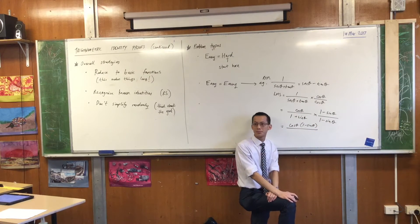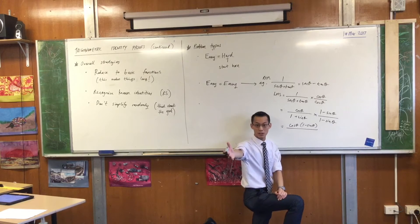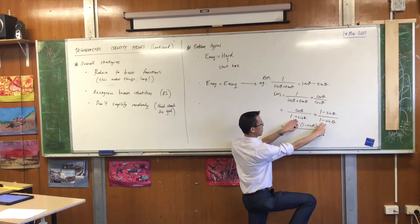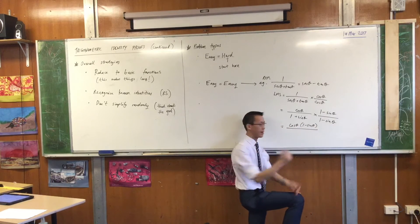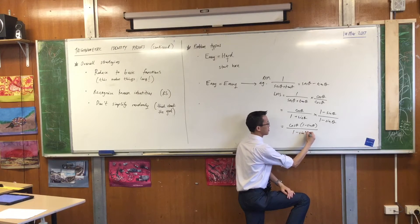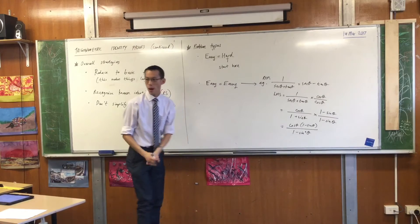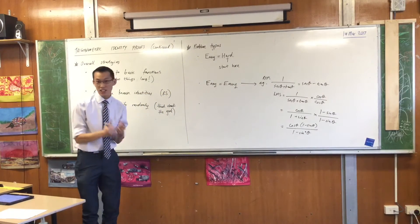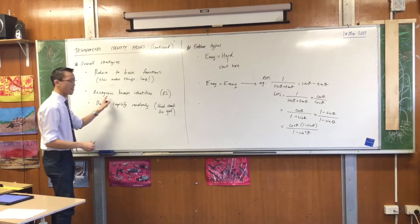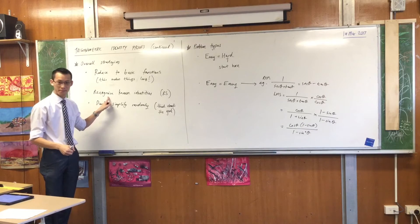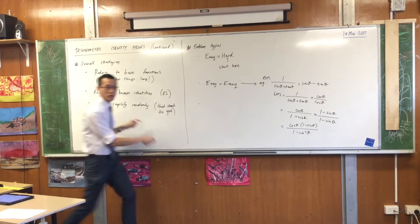What about the denominator? 1 minus sine squared. I have differences of squares here, don't I? These two here are sort of conjugates, aren't they? So this is going to become 1 minus sine squared. Now it's starting, maybe, to unravel in your mind. That denominator, I can use one of the identities that I recognize. Which one? Cos. Cos. This is a version of the Pythagorean identity.